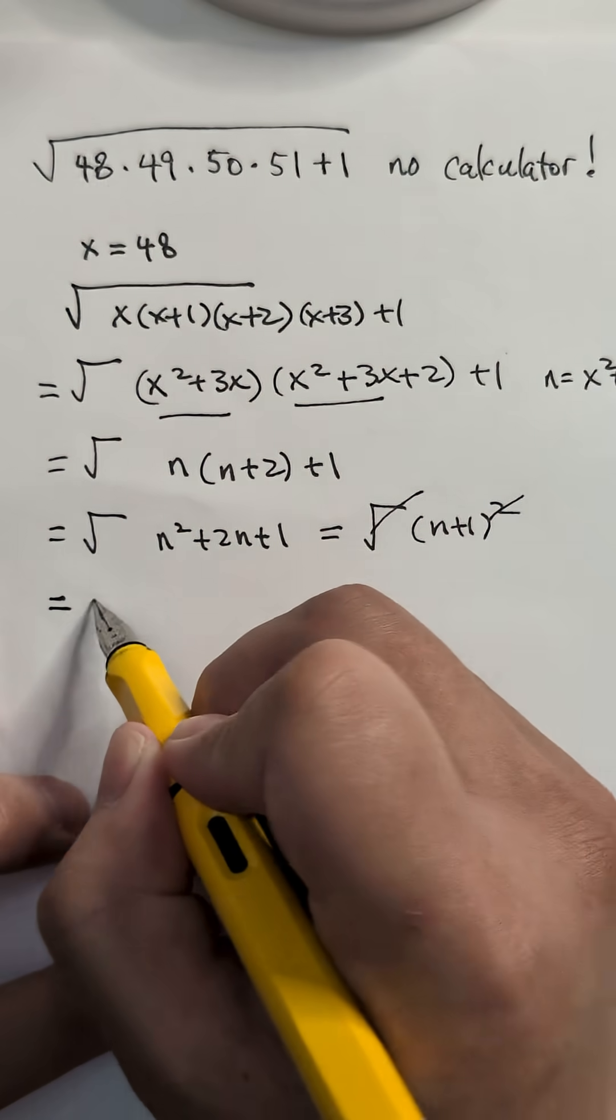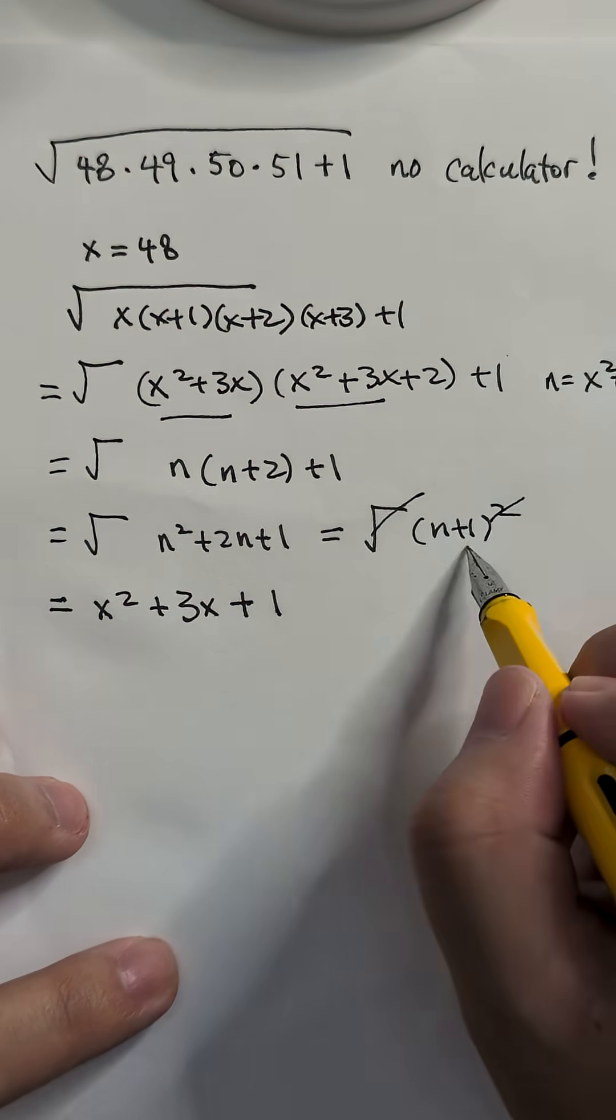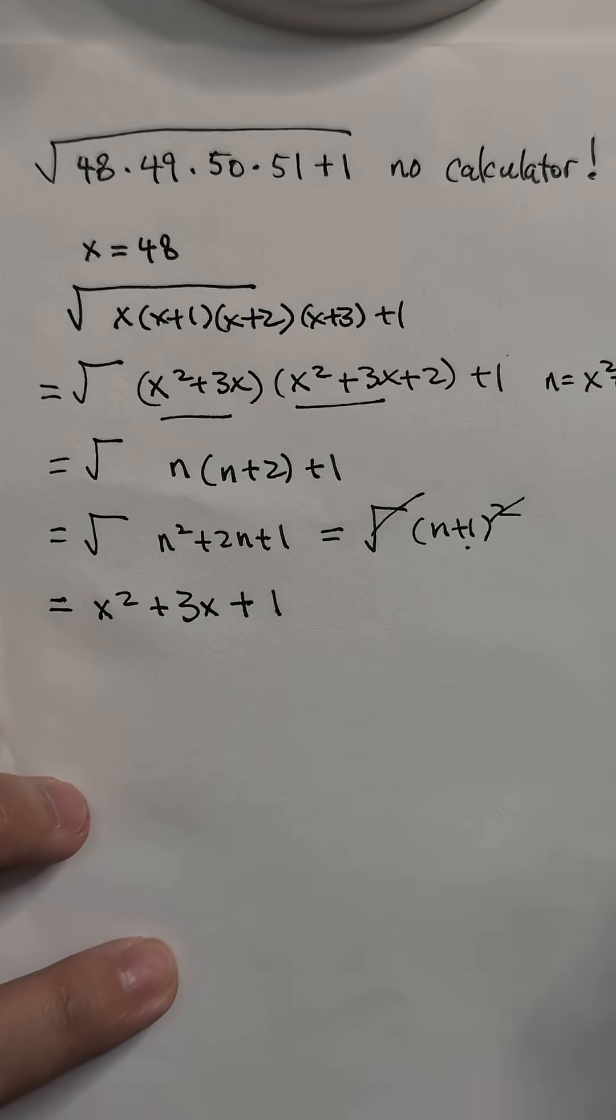But what is n? n is actually x squared plus 3x plus 1. Right? The one here.